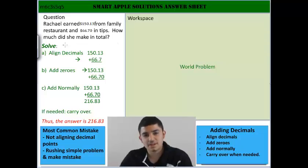So first off, when we're adding decimals, the first thing we need to do is align the decimals, then add zeros, so then we can add them normally. Then all we need to do is carry them over.